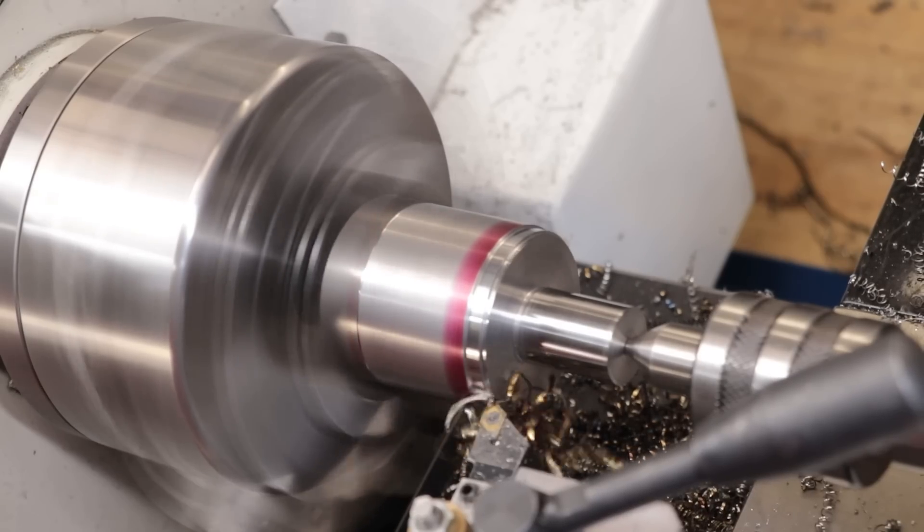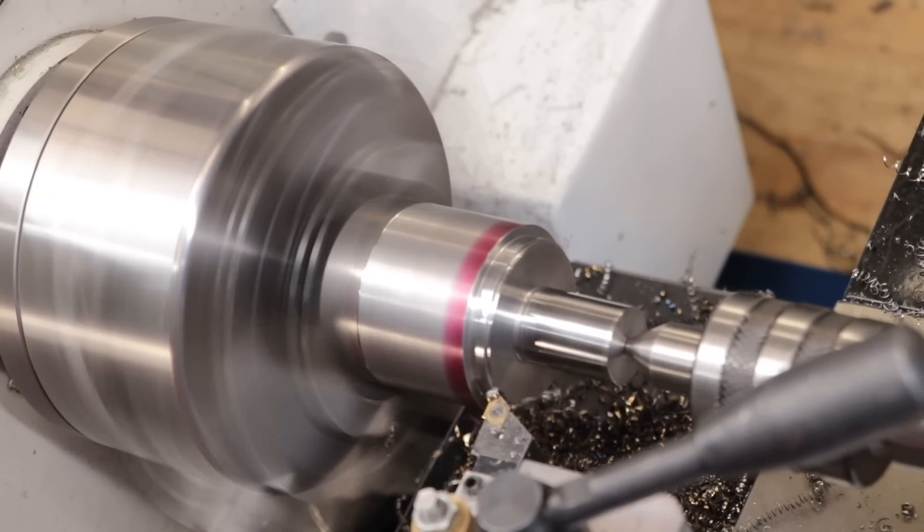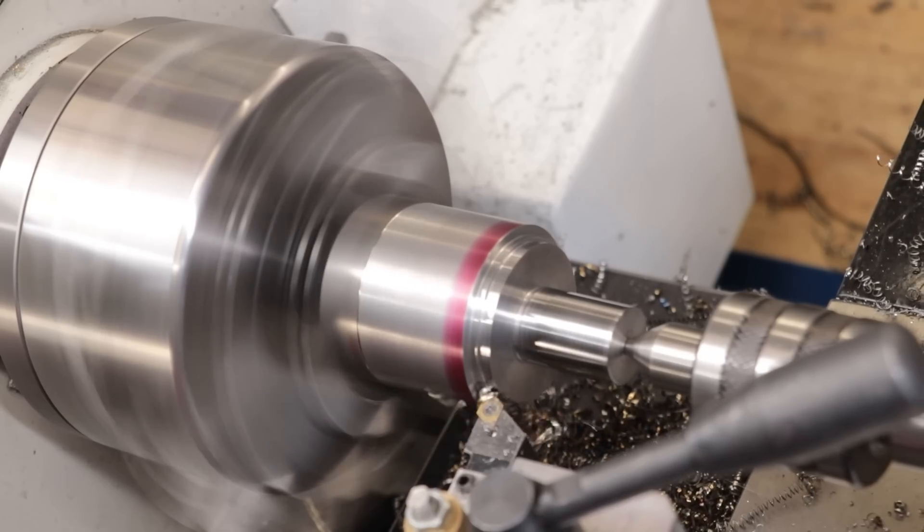So the next feature I need to turn in is a shoulder and a chamfer on the top edge. This will allow me to get in with the spindle wrench and install this part into the milling machine.